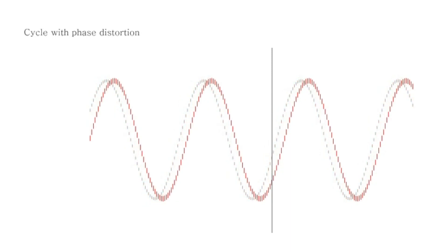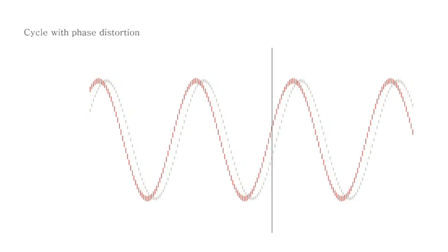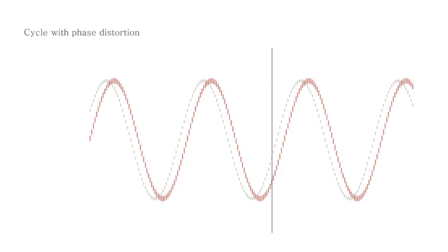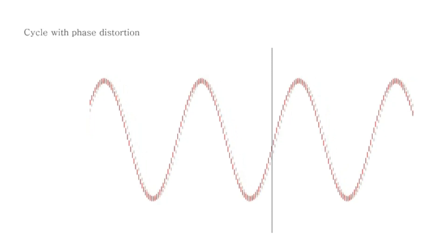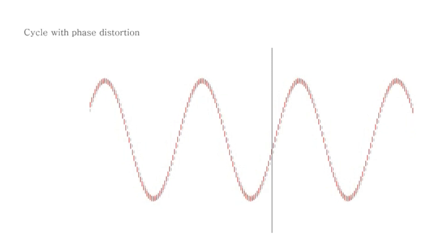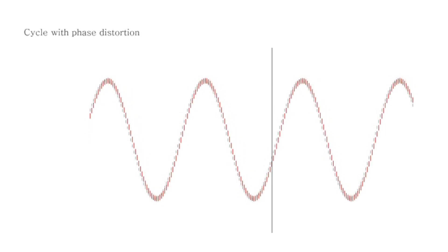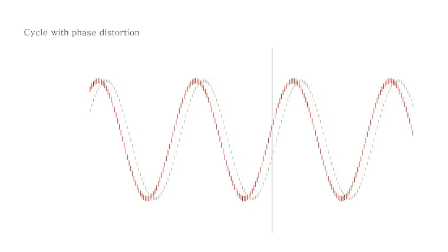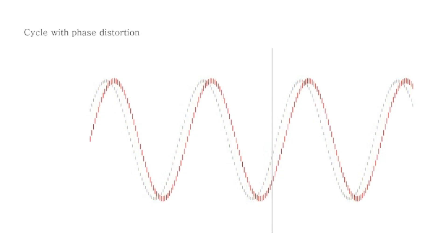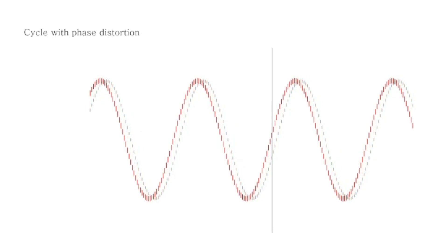This animation now shows one component: the cycle moving around its main parameter — the phase. The red cycle shifts in terms of phase, which means the tops and lows of the red cycle vary in time — when the top or low of this cycle might happen. Notice that the cycle length is not changed here; only the phase is shifting.